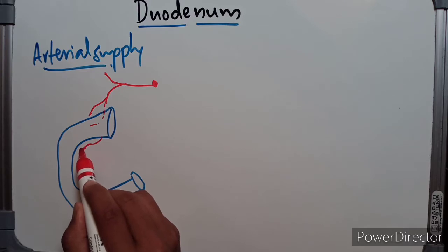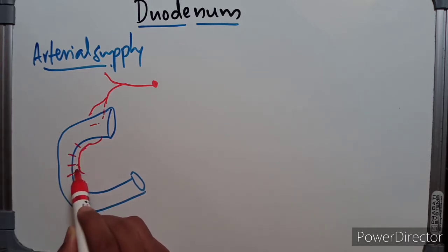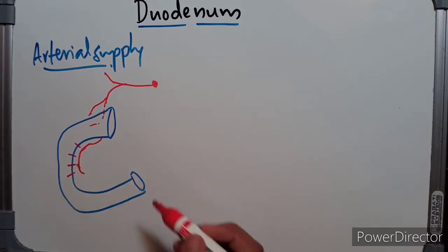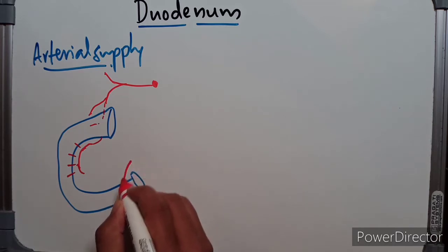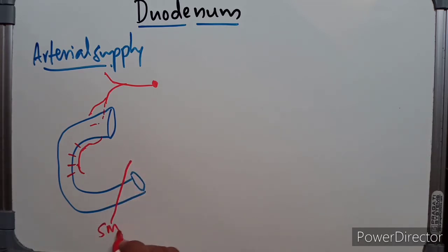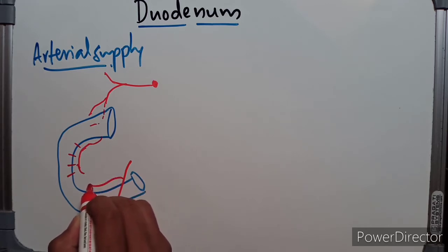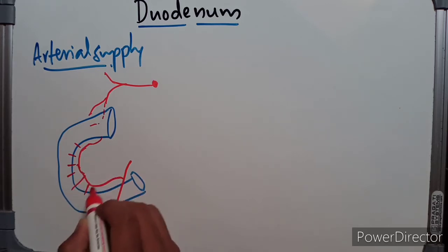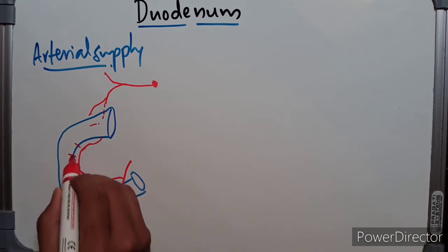The superior pancreaticoduodenal artery arises from the gastroduodenal artery. We also have the superior mesenteric artery (SMA), which gives the inferior pancreaticoduodenal artery, which will anastomose with the superior pancreaticoduodenal artery.